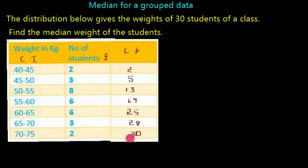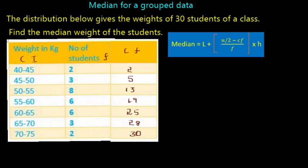By the end of the CF column, we get the total number of observations we have considered. To find the median for a group of data, we have the formula: Median equals L plus (N divided by 2 minus CF) all divided by F, multiplied by H.